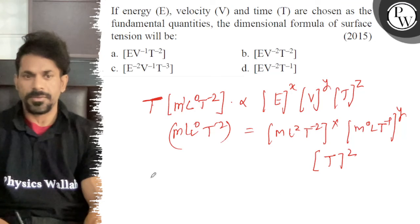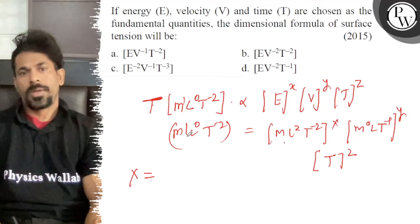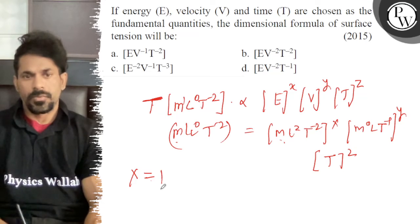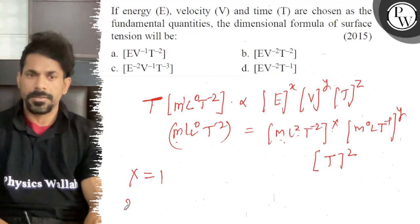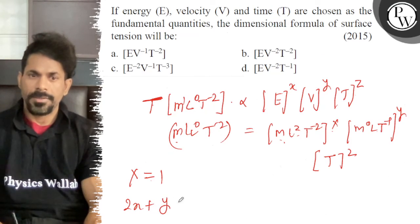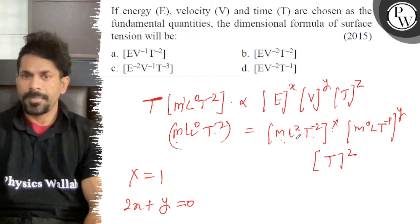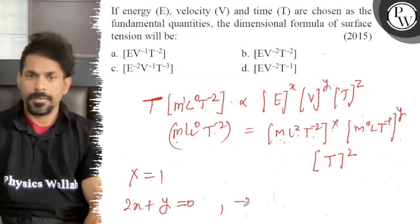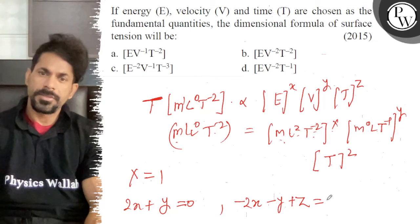So, that is equal to 1, x is equal to 1, then 2x plus y and that is equal to 0. And T can be minus 2x minus y plus z that is equal to minus 2.